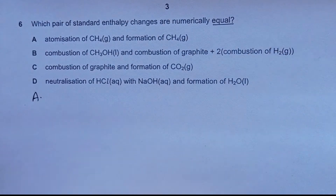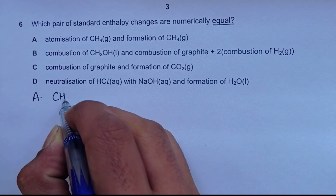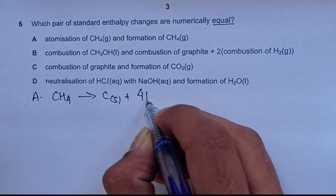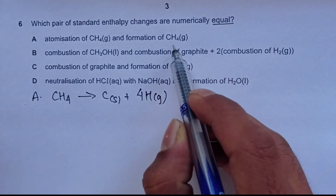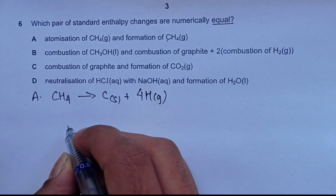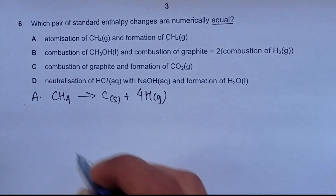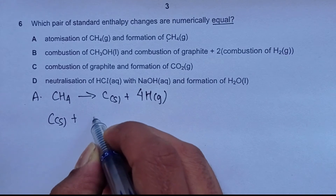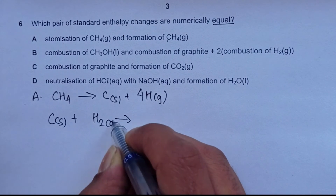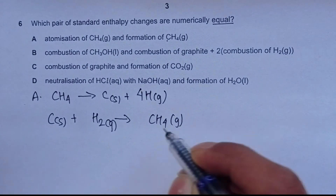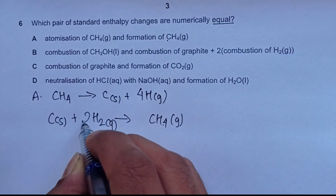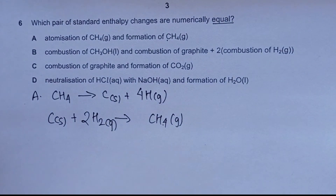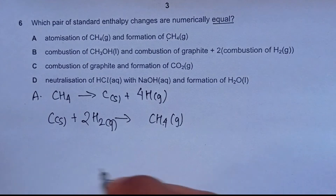Choice A is atomization of methane versus formation of methane. Atomization of methane gives us carbon and four hydrogen atoms. Formation of CH₄ means from its constituent elements: carbon (solid/graphite) and H₂ gas gives us CH₄ gas. These two equations are not the same, so the enthalpy changes will be different — choice A is incorrect.